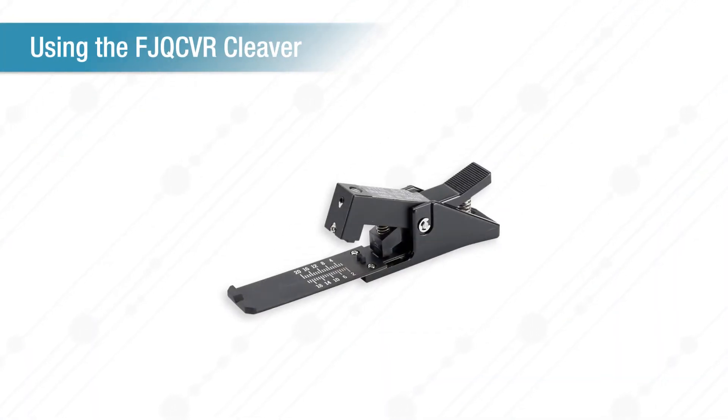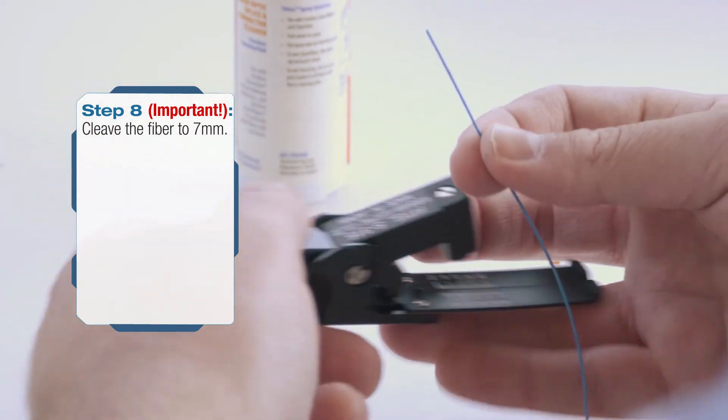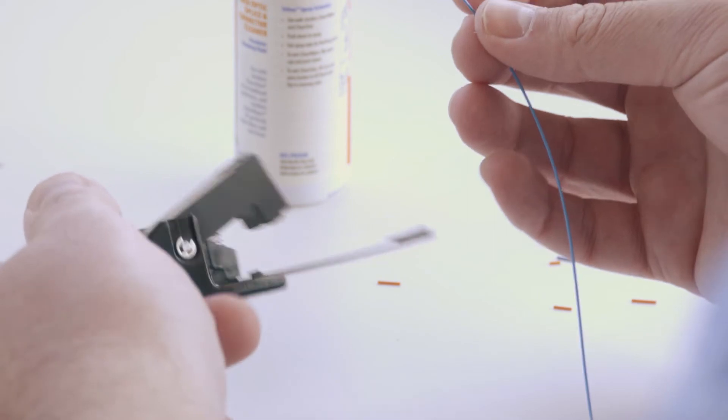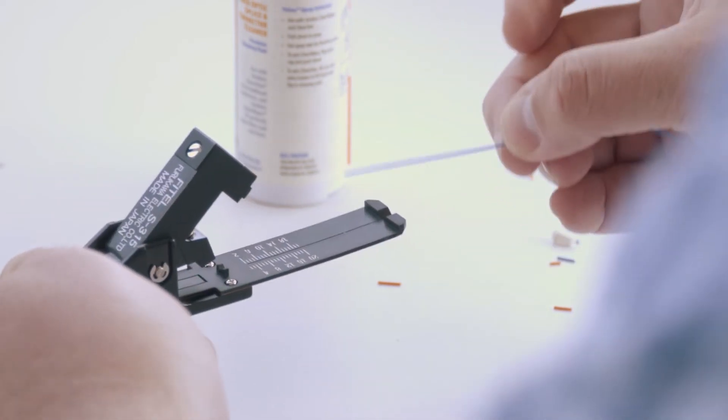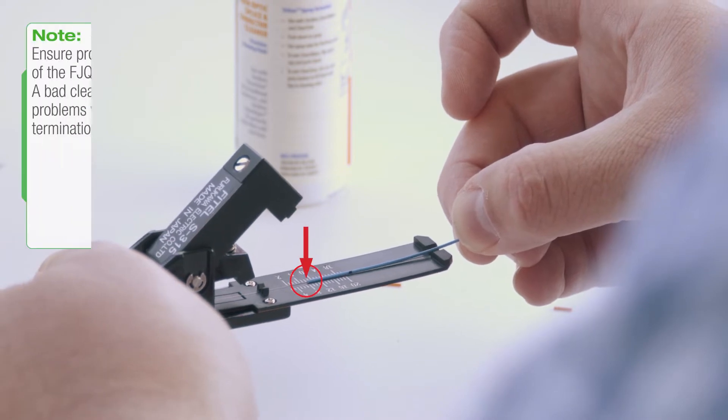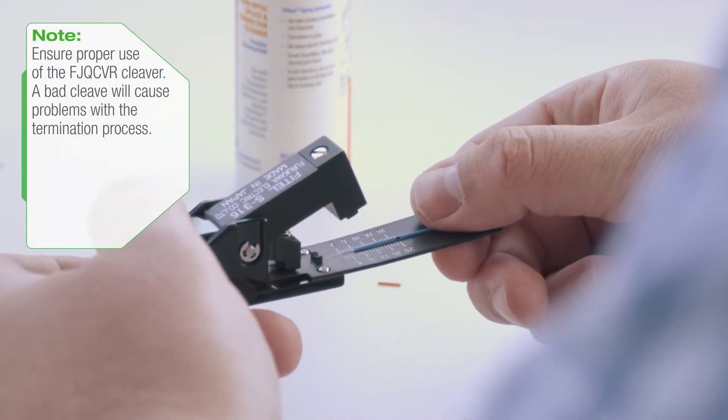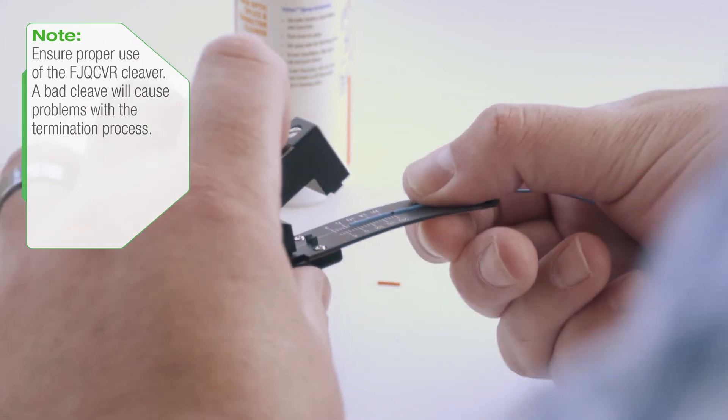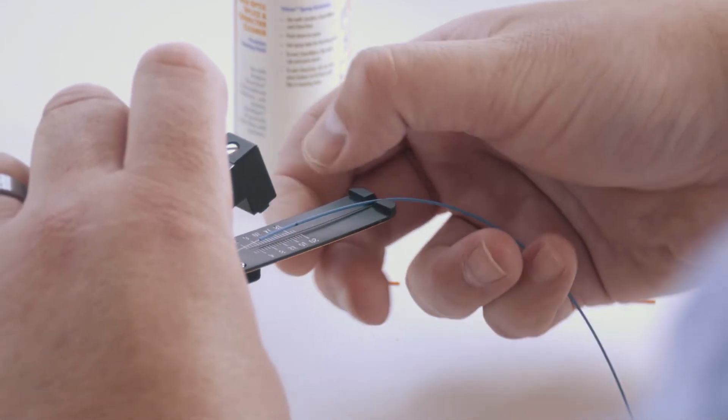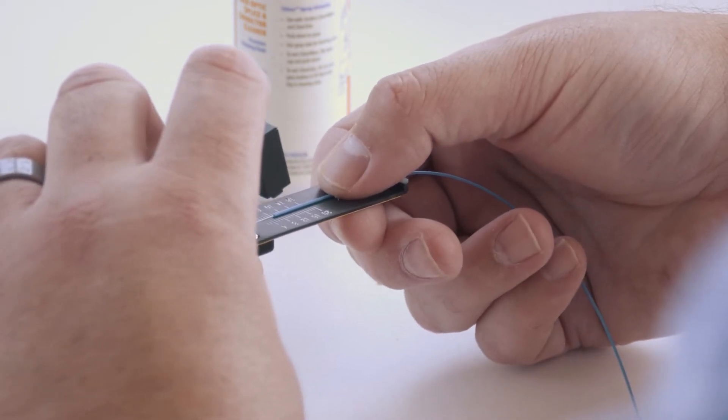If using the FJ-QCVR cleaver, cleave the bare fiber to 7 millimeters. Press the handle at the back of the cleaver to lift the grip. Slide the bare fiber through the V-Groove until the end of the buffer sits at the 7 millimeter mark. Release the handle so that the grip lowers onto the fiber, holding it in place. Keeping the fiber taut, gently depress the blade onto the fiber once and only once to score the fiber.